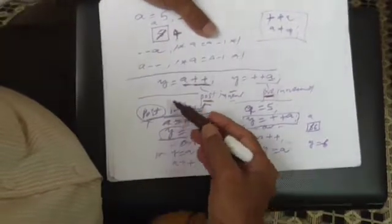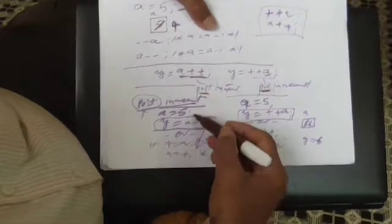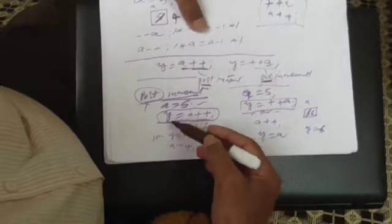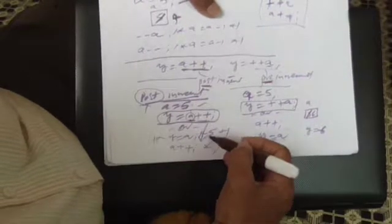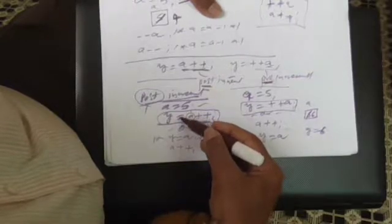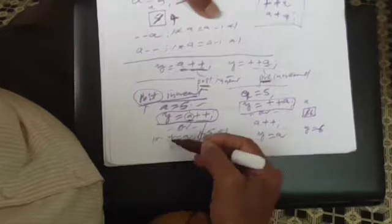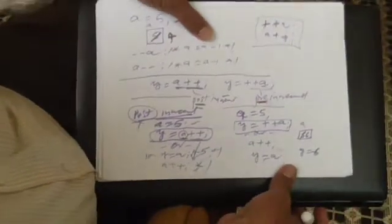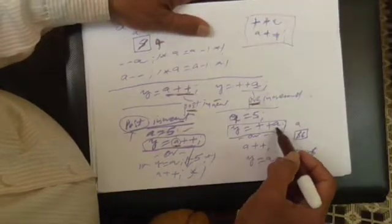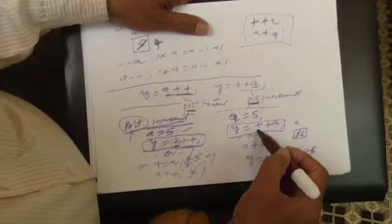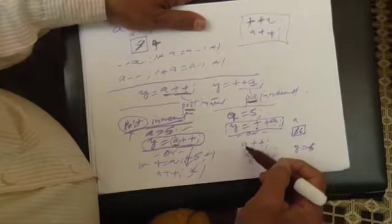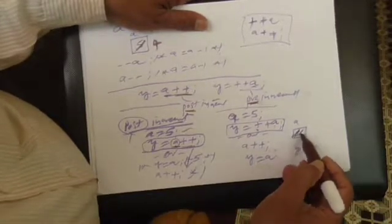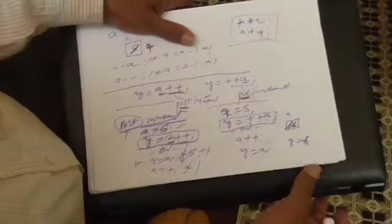How does it affect an expression? If A is 5 and you write Y = A++, as it is a post-increment, first the current value of A is taken — so Y = A++ is equivalent to writing Y = A and then A++. So Y becomes 5. But if you write Y = ++A, first the value of A is incremented, then the new value of A is assigned, so Y becomes 6.